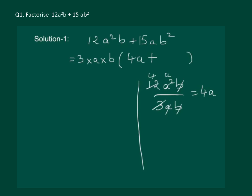Let us proceed to find the second term. So again we take 15ab square and divide it by what we have taken as common. Then we get 3 fives are 15. A gets cancelled and one of the b remains.